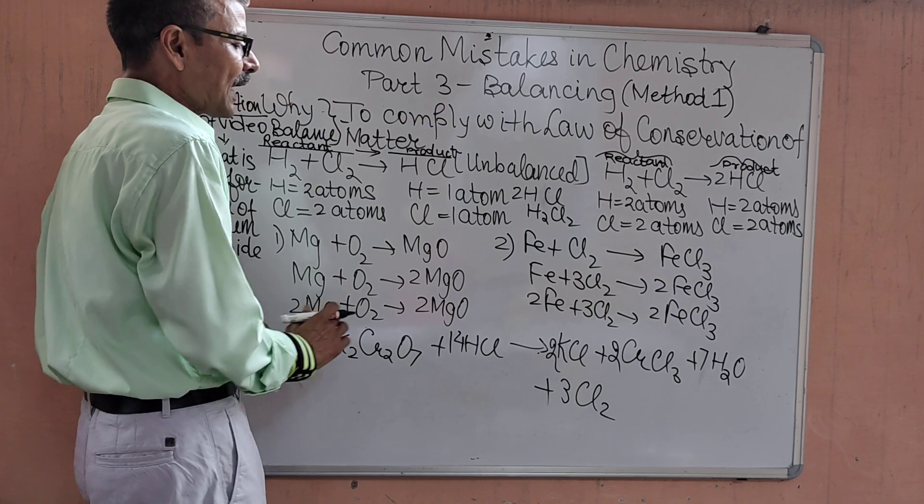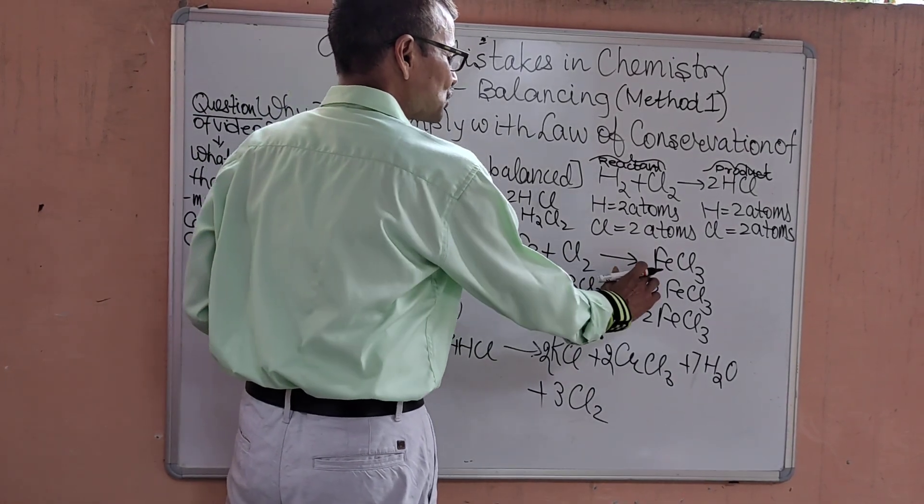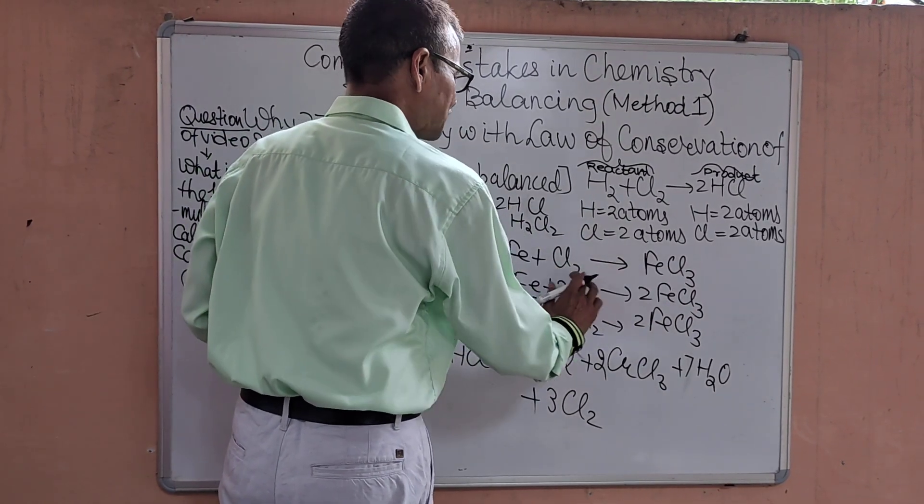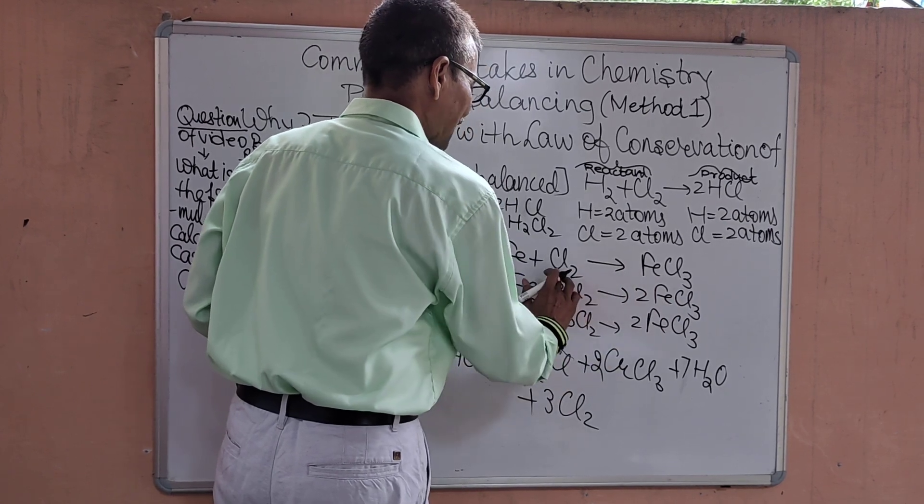And now we have the balanced equation: 2 Mg plus O2 giving you 2 MgO. Another example for balancing: Fe plus Cl2 giving you FeCl3. Here the chlorine has to be balanced. 2 atoms here, 3 atoms. We multiply this by 2 and this by 3.